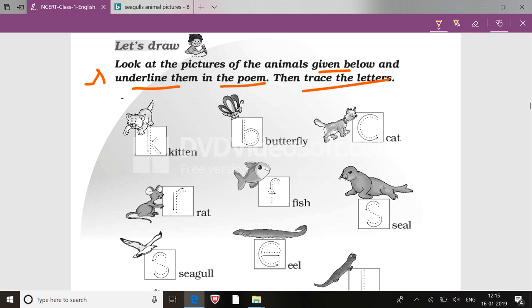K for kitten, B for butterfly, C for cat, S for seal, F for fish, R for rat, S for seagull, E for eel.